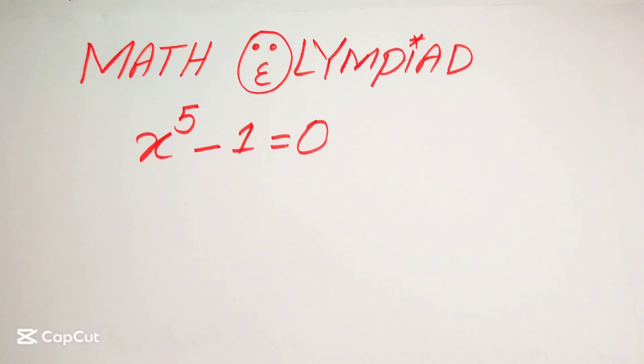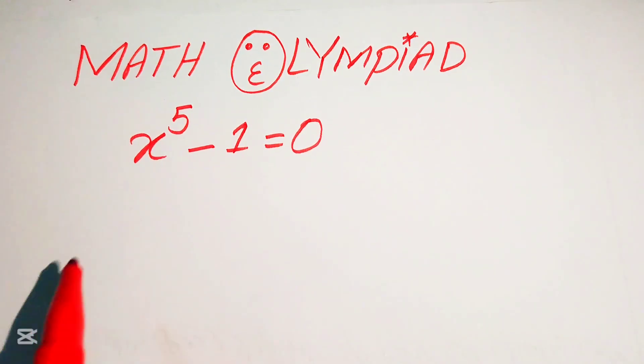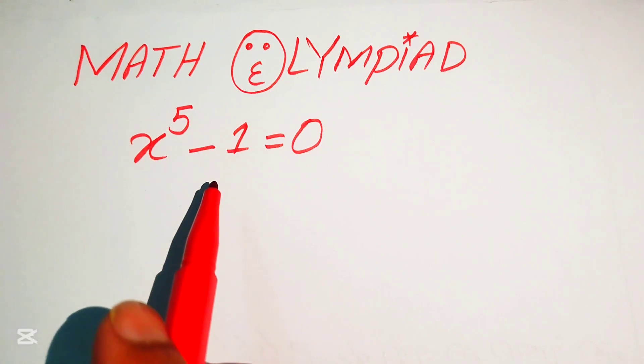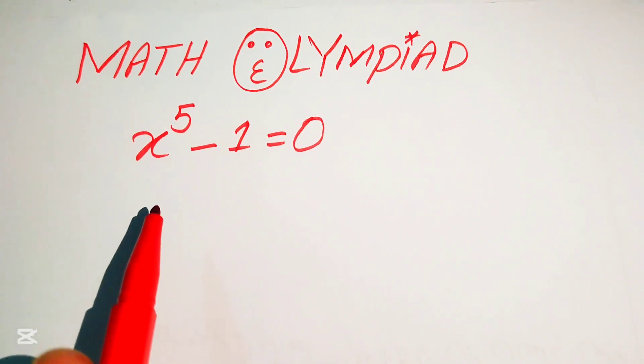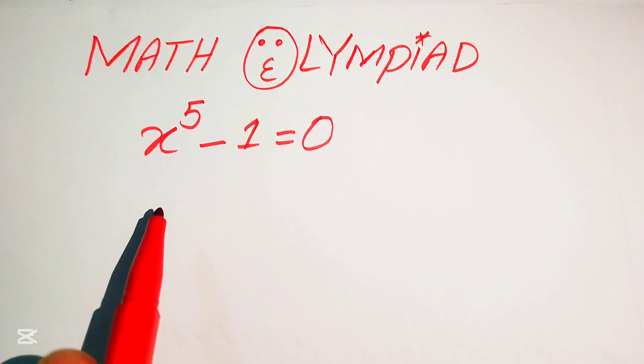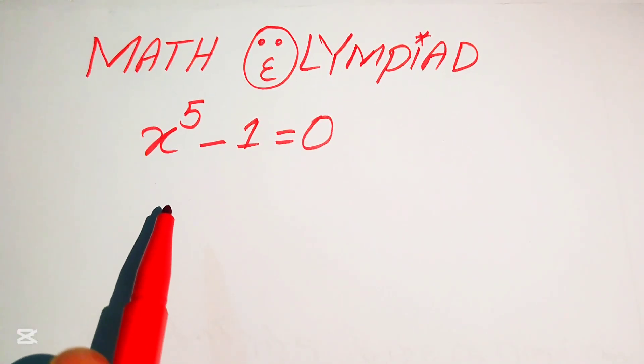Hello everyone, welcome to solve this nice math algebra problem. Here we have x to the power of 5 minus 1 equals to 0, and we solve this problem for the values of x.